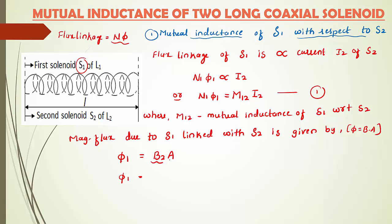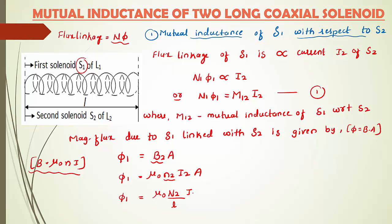We know the equation for magnetic field: B = μ₀nI, which was studied in the previous chapter. So in place of B2 we write μ₀n2I2. Therefore φ1 = μ₀n2I2A. We can also write this as φ1 = μ₀N2I2A / L. Let us take this as equation number 2.